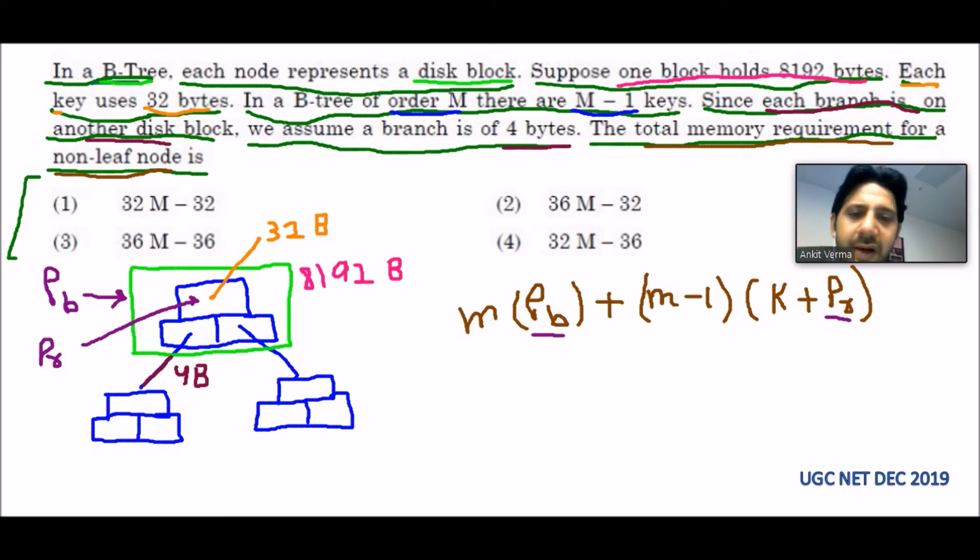If I put all the values, what is PB? Block pointer 4, because this is a pointer, those who are pointing to another block. This is also a block and they are pointing, so 4 will be the value.